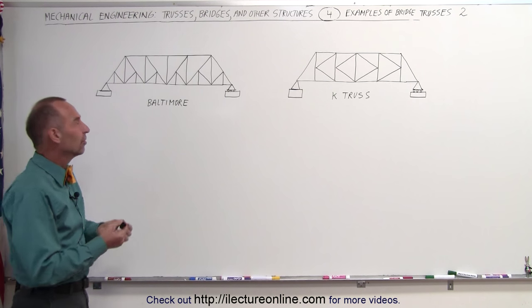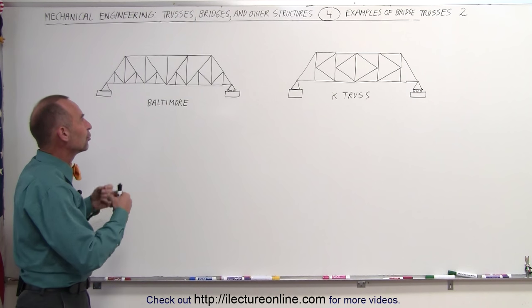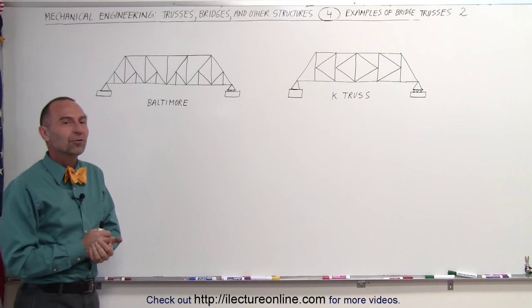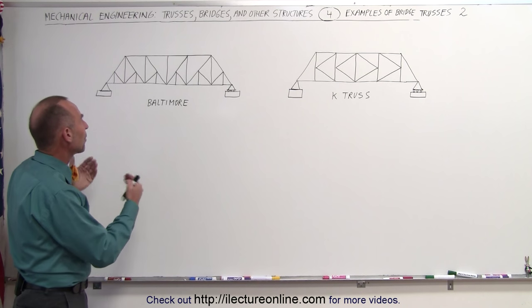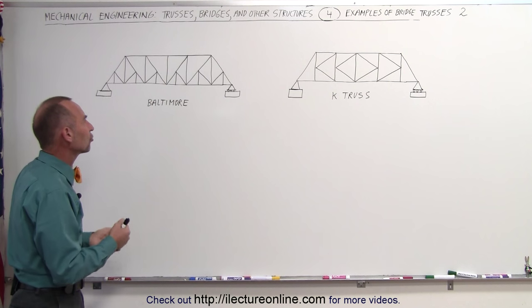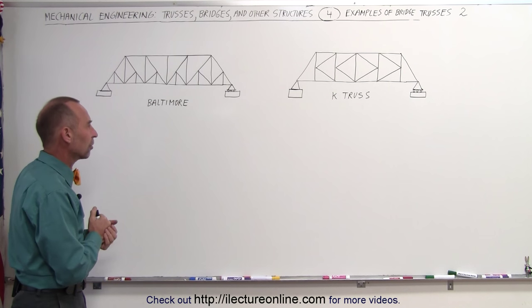So people always came along and tried to find different ways of improving upon other people's designs. This is basically the Pratt structure with some additional members put in for additional strength in the overall structure of the truss.